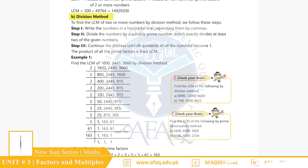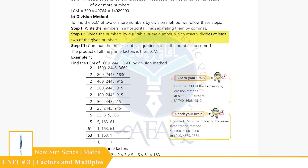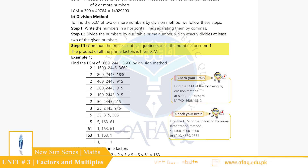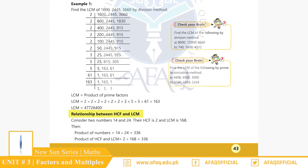LCM معلوم کرنے کا دوسرا method ہے Division Method۔ Step 1: numbers کو horizontal line میں comma ڈال کر لکھیں۔ Step 2: ایک suitable prime number جو کم سے کم دو دی ہوئے numbers کو divide کر سکے، سے divide کریں۔ Step 3: یہ process تب تک جاری رکھیں جب تک تمام quotients ایک کے برابر نہ ہو جائیں — حاصل کردہ prime numbers کا ضرب ہمارا LCM ہوگا۔